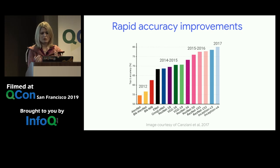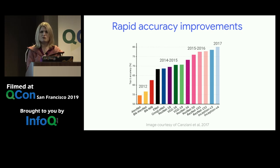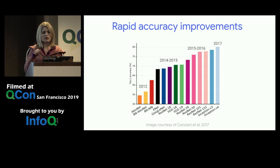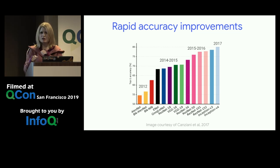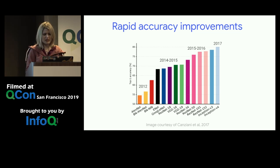A number of the high-level APIs used for deep learning projects are for very well-defined, out-of-the-box tasks. But they aren't really good at being stitched together, composed, and integrated effectively.